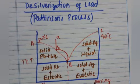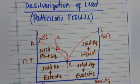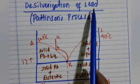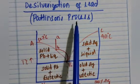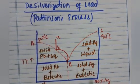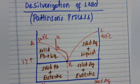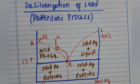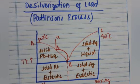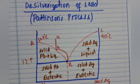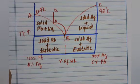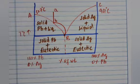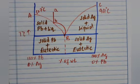Hello dear students, today let us discuss the desilverization of lead by Pattinson process. Argentiferous lead contains a small amount of silver. The process of removal of silver from Argentiferous lead is called desilverization.